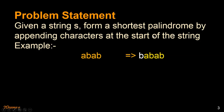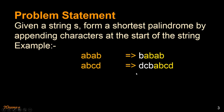For example, if you have a string like ABAB, we can form a shortest palindrome by appending B to the start of it. Similarly for ABCD, we can append DCB at the start of the string and form the shortest palindrome.